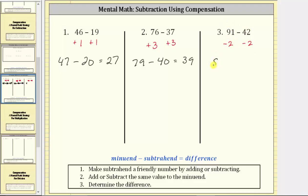91 minus two is 89. 42 minus two is 40. The equivalent difference is 89 minus 40, which equals 49.